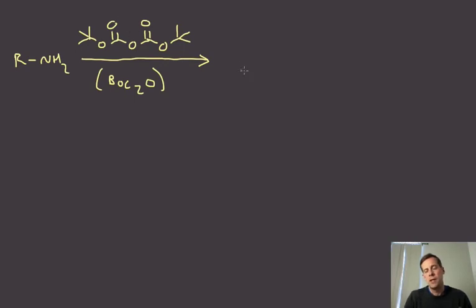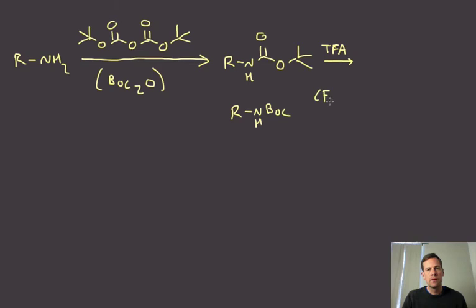If we just react this anhydride with an amine, just like with any anhydride, we can achieve that reaction. And so we will get to this carbamate. So we have protected that amine as the tert-butyl carbamate, which is usually abbreviated as the BOC group. A chemist would say, I just BOC protected my amine. And what's useful here is that because the tert-butyl group can lead to a stable tertiary carbocation, we can actually deprotect the BOC group with acid. So trifluoroacetic acid, TFA, removes the BOC group. So you put it on with BOC anhydride and you take it off with TFA. It's very straightforward.